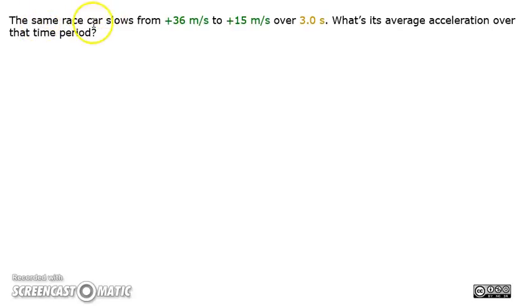The same race car slows from positive 36 meters per second to positive 15 meters per second over 3.0 seconds. What is average acceleration over that time period?